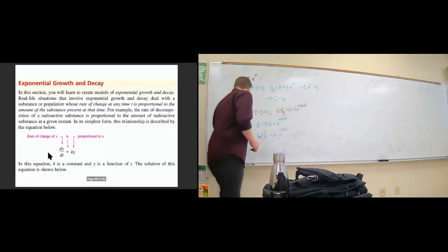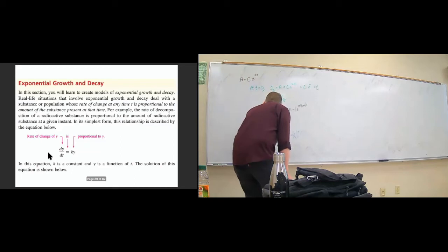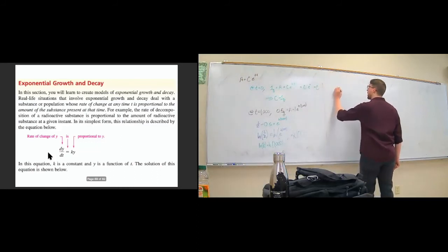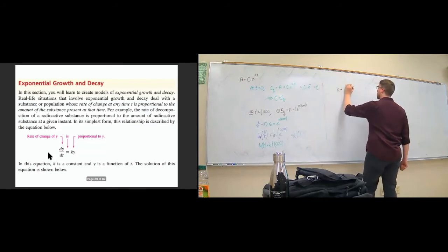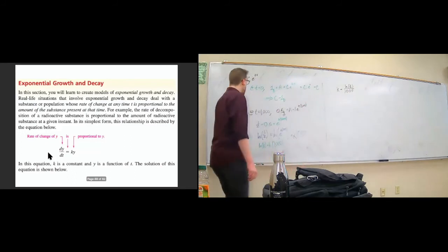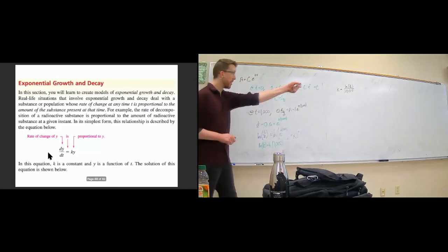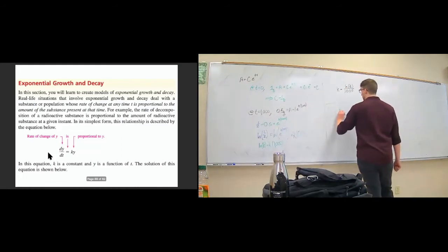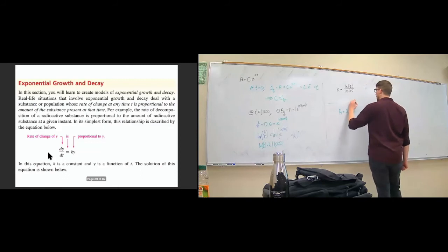We take the ln of both sides. This tells us that the ln of one half is equal to K times 1000. So we divide both sides by 1000, and we get that K is equal to the ln of one half divided by 1000.